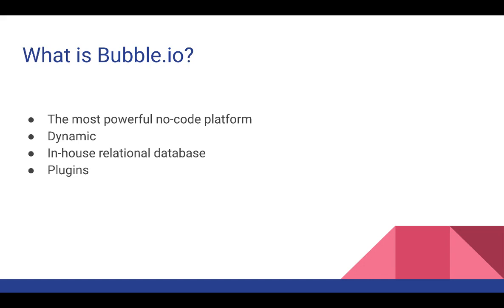And then there are plugins. If a feature isn't provided by Bubble off the shelf, there are third-party developers who have created plugins. For example, payment processing, live chat — there are so many plugins. Last time we checked there were over 750 to 800 plugins you can quickly install into your application.